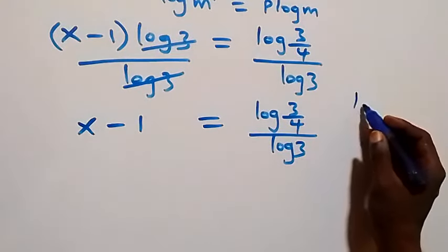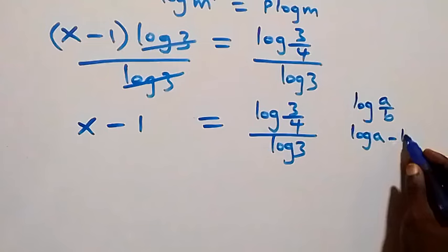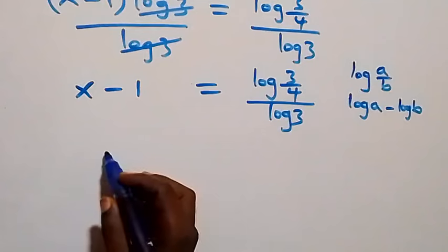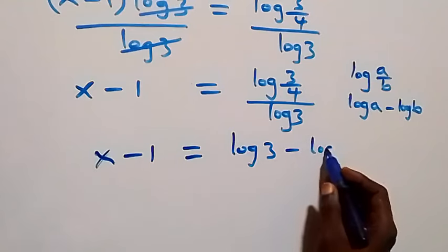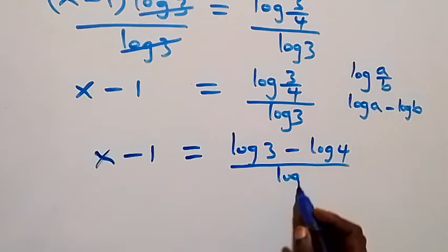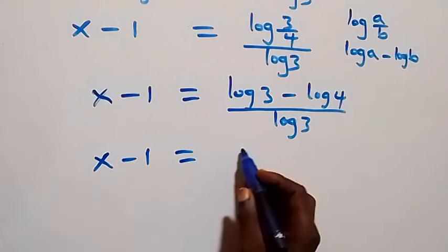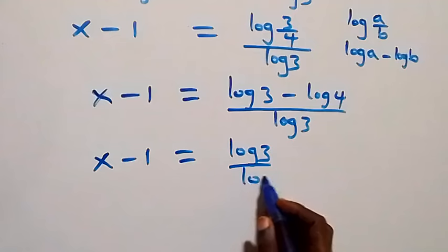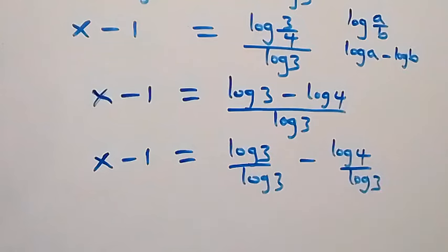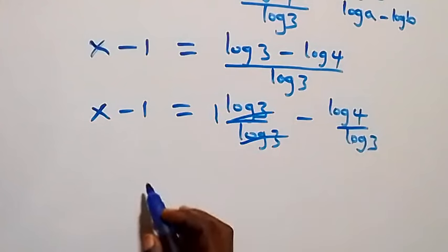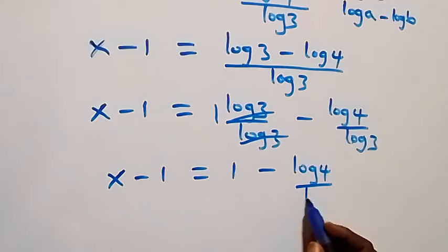Applying the law of logarithms — log(a/b) can be separated as log a minus log b — we have x minus 1 equals to log 3 over log 3, then minus log 4 over log 3. Since log 3 over log 3 equals 1, we get x minus 1 equals 1 minus log 4 over log 3.